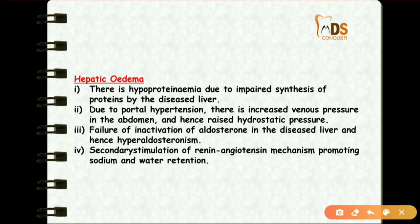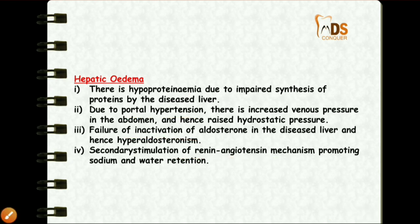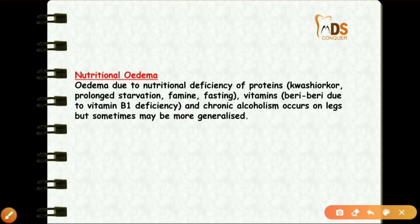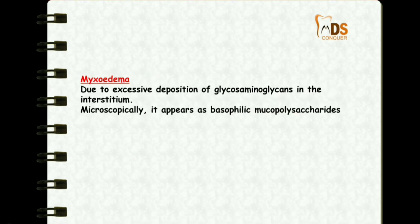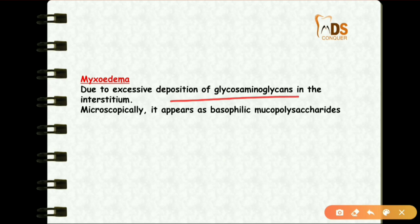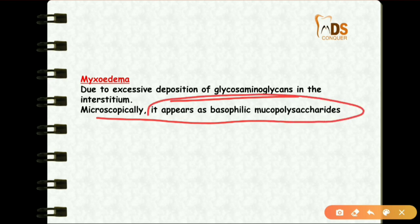In hepatic edema, there is hypoproteinemia, portal hypertension, failure and inactivation of aldosterone, and secondary stimulation of the renin-angiotensin mechanism. In nutritional edema, deficiency of proteins — as in kwashiorkor or prolonged starvation — along with vitamin deficiencies and chronic alcoholism may lead to edema. Mixed edema is due to deposition of glycosaminoglycans in the interstitium, which appear as basophilic mucopolysaccharides when seen microscopically.